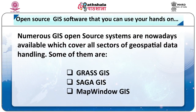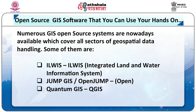Open source GIS software includes GRASS GIS, SAGA, Map Window GIS, ILWIS — that is Integrated Land and Water Information System — Jump GIS, OpenJump, and QGIS or Quantum GIS. The list is endless. So please do not give me the reason that it is very expensive — it is not. Just go to Google, search, download, and you are ready.